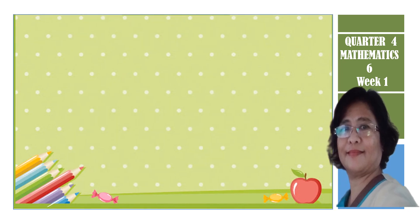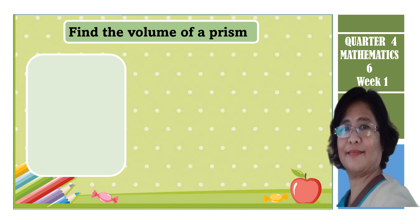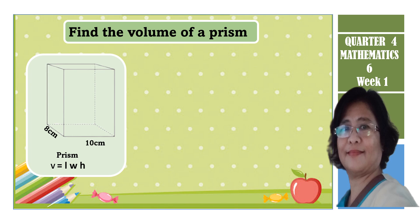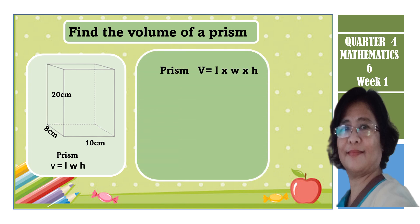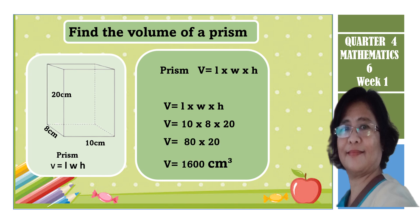We now know the relationship of each solid figure. Let us find out the volume of the prism using the formula. Using the given formula, substitute with the given numbers: 10 times 8 equals 80, times 20. The volume of this rectangular prism equals 1,600 cm cubed.